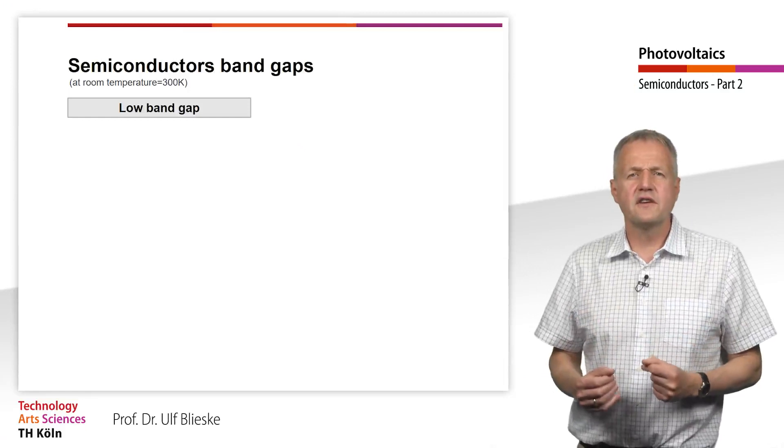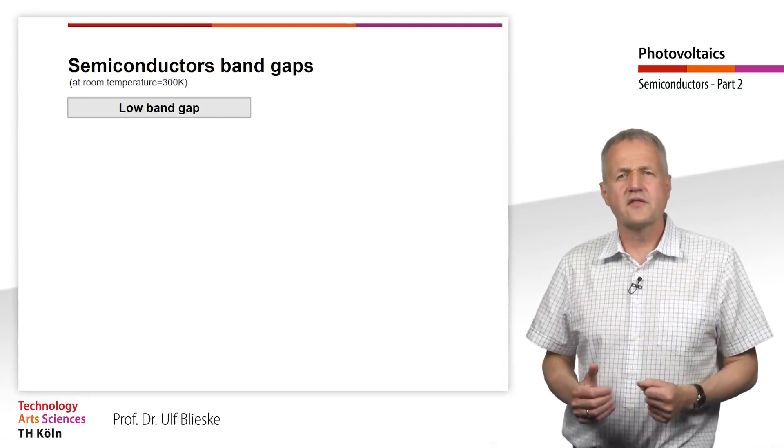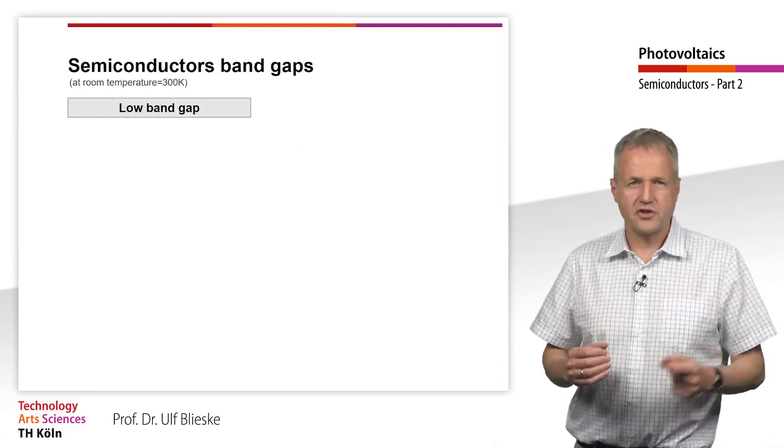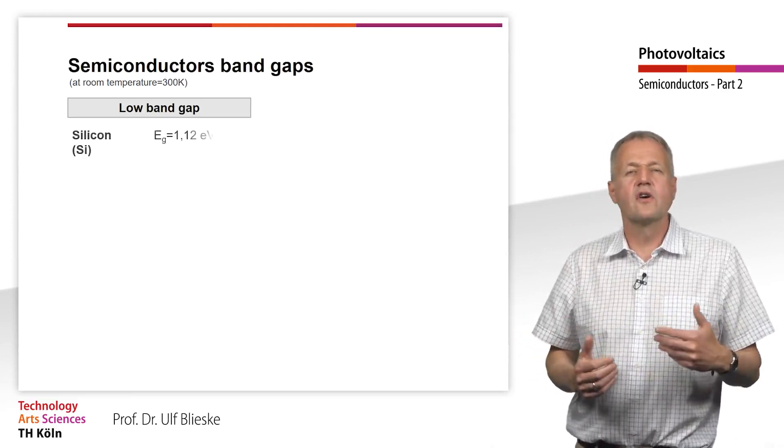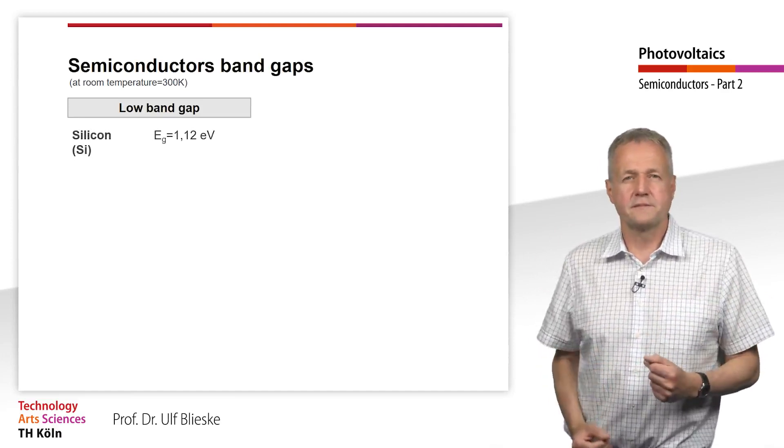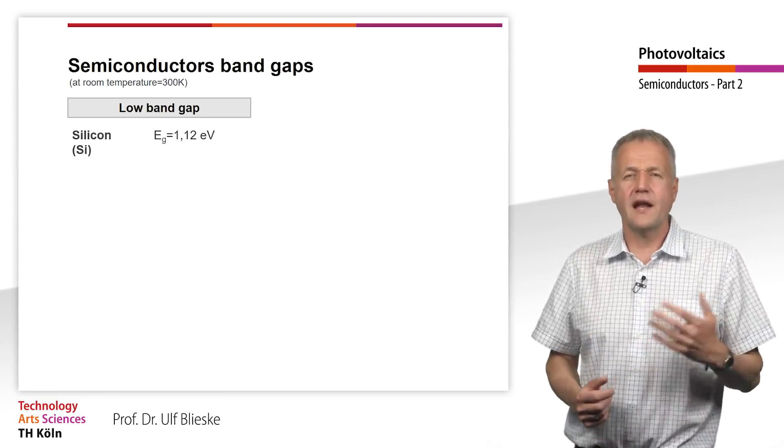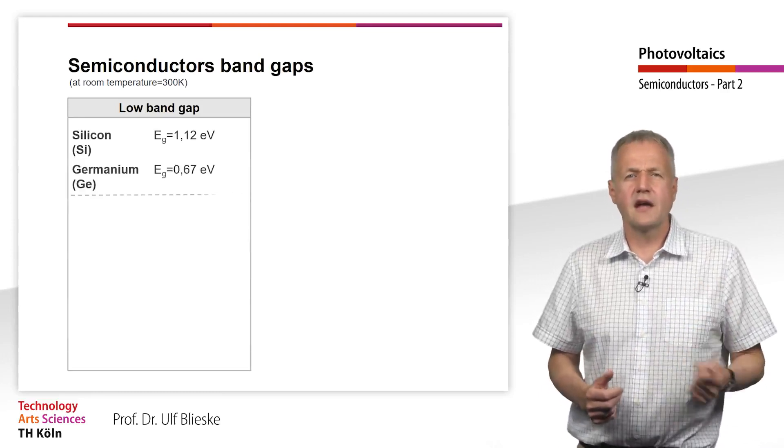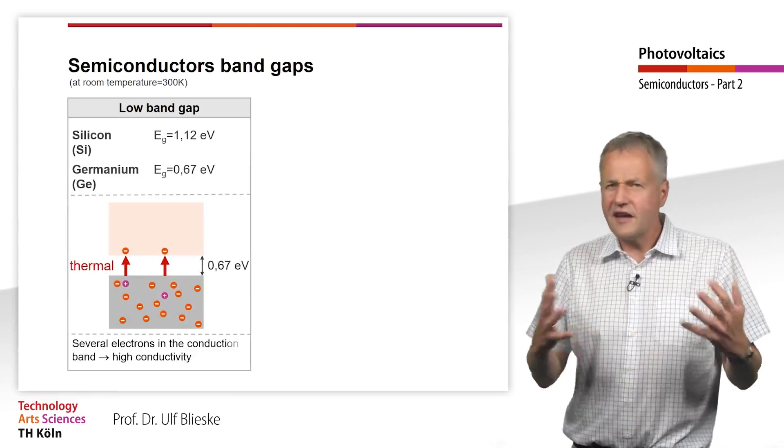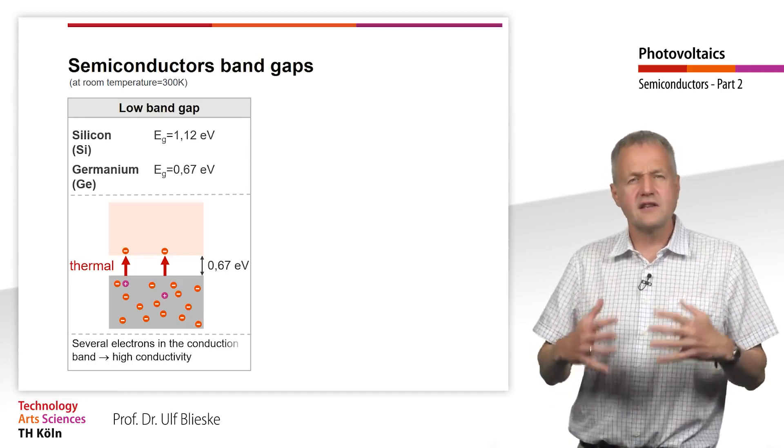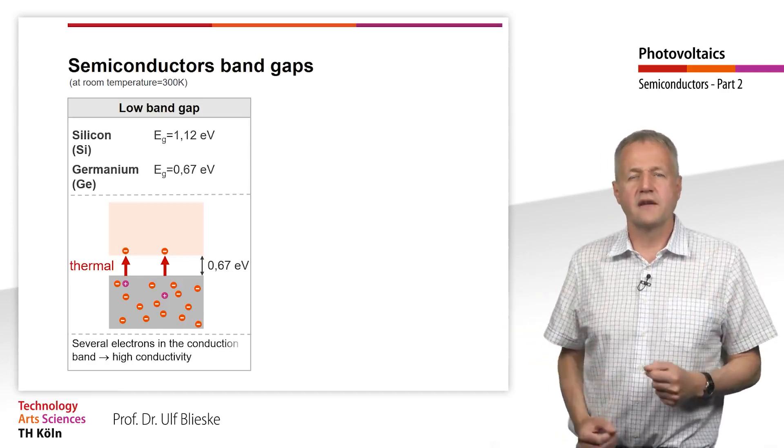We now consider semiconductors with different band gaps. The band gaps are given at room temperature. First, we will look at semiconductors with comparatively low band gap. Like silicon with a band gap of 1.12 eV or germanium with a band gap of only 0.67 eV. In such semiconductors with low band gap, a significant number of electrons are in the conduction band at room temperature.